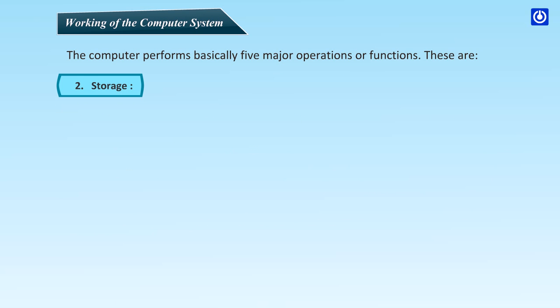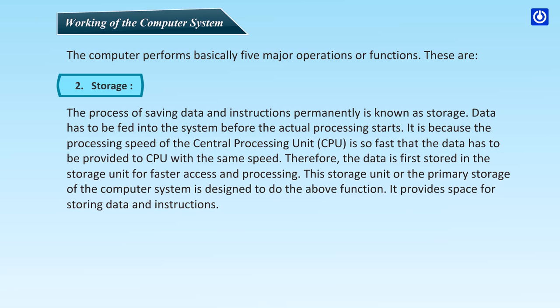Second, storage. The process of saving data and instructions permanently is known as storage. Data has to be fed into the system before the actual processing starts. The processing speed of the CPU is so fast that the data has to be provided to the CPU with the same speed. Therefore, the data is first stored in the storage unit for faster access and processing. This storage unit, or the primary storage of the computer system, provides space for storing data and instructions.